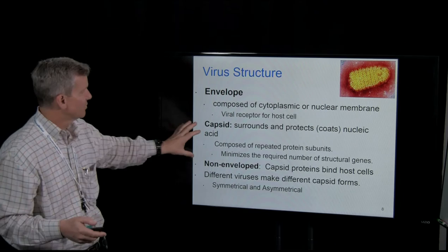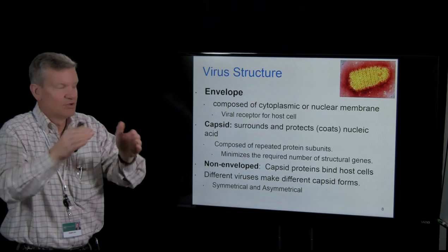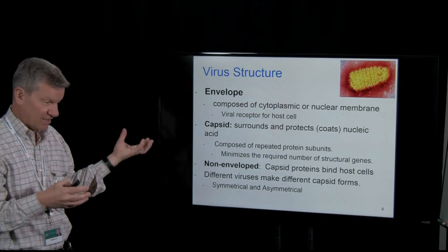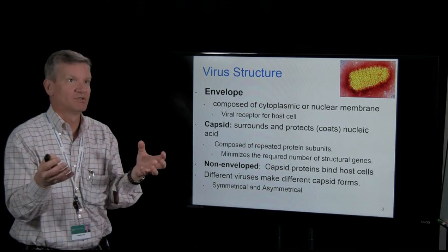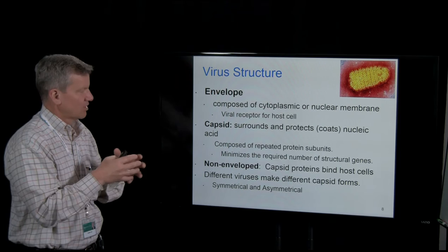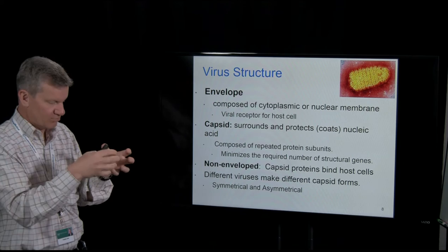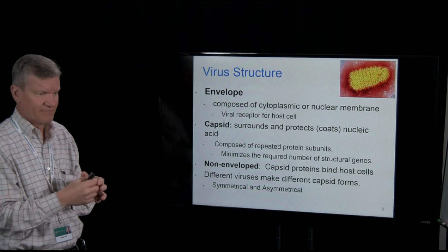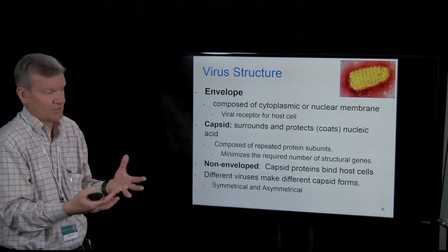The structure of viruses — we'll start in the middle with the capsid. The capsid surrounds and protects the nucleic acid, and proteins generally compose it. The genetic material of the virus encodes the proteins, and there are usually repeated subunits. Viruses have to have repeating subunits because the genomes of viruses aren't very big. You saw how small poliovirus was — it can't have a very big genome because it's such a small viral particle.